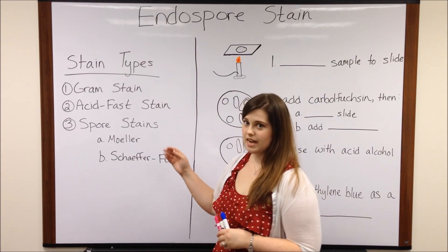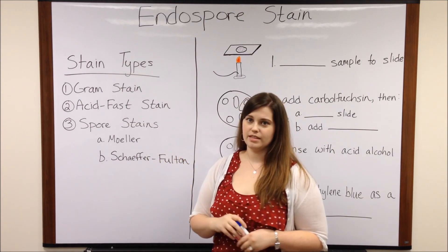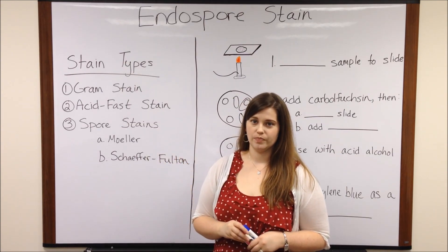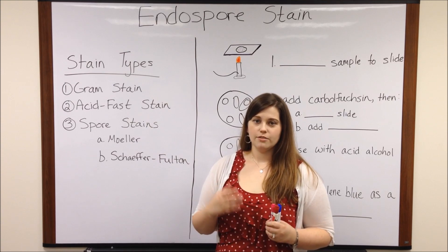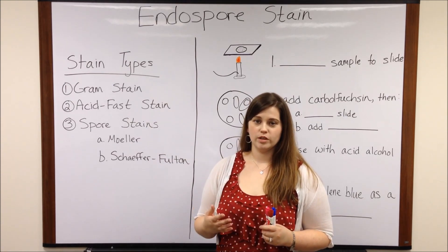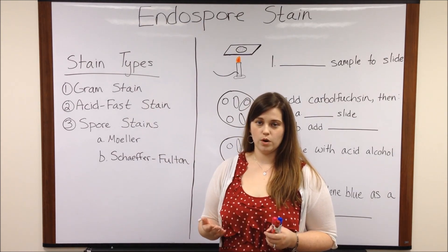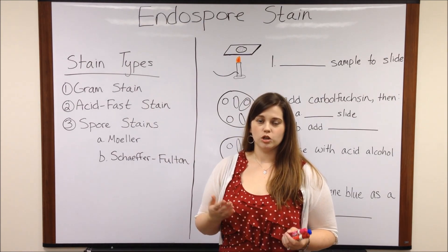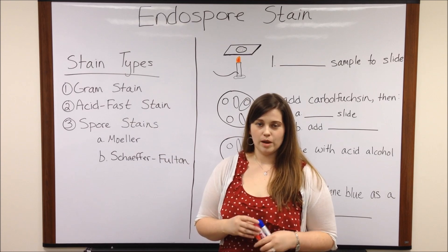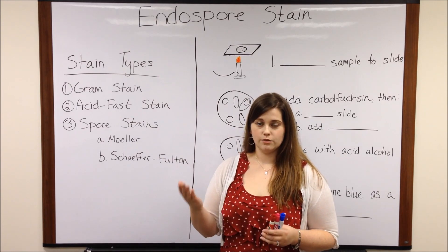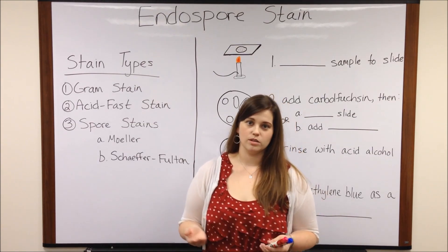Another type of stain is the spore stain, and there are a couple of different methods for staining endospores. Remember that endospores are tough, dormant, non-reproductive structures that certain types of gram-positive bacteria form during harsh environmental conditions. If you're interested in learning more about endospores or the process of forming endospores called sporulation, see my videos on those topics.